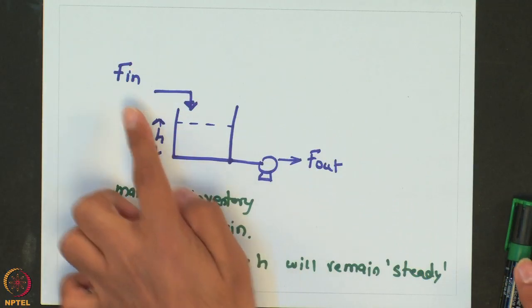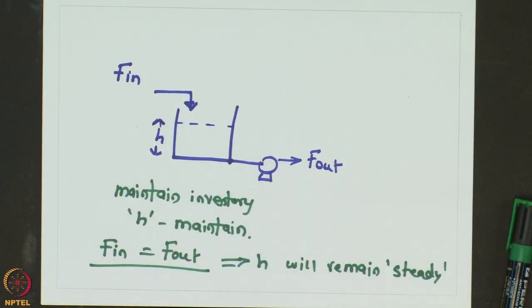So typically, if you want to maintain a particular height in this tank, you have to take certain action. The control system has to ensure that if it has to maintain the height, it has to somehow change the outlet flow rate such that it becomes equal to the inlet flow rate, so that you can maintain a particular height inside the tank.